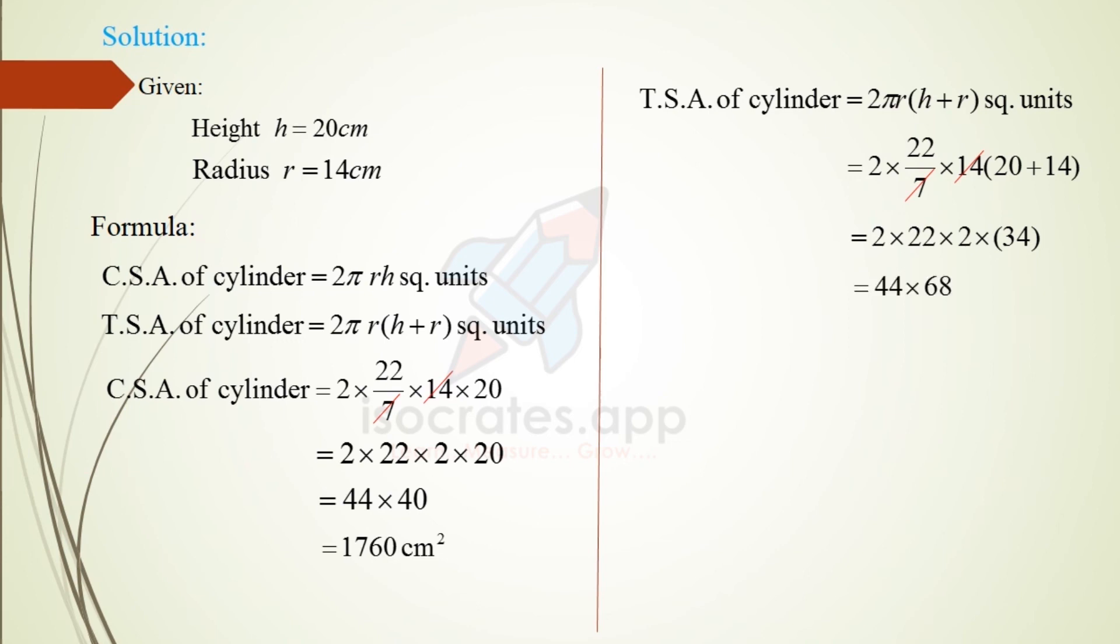2 into 22 is 44, and 2 into 34 is 68. 44 into 68 is equal to 2,992 centimeter square, and the total surface area of the cylinder.